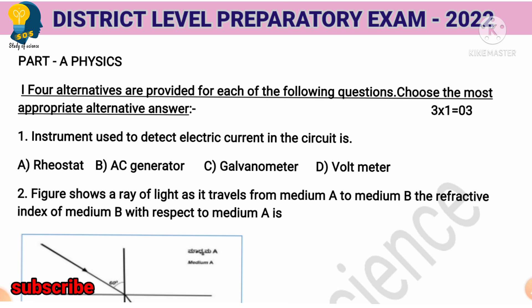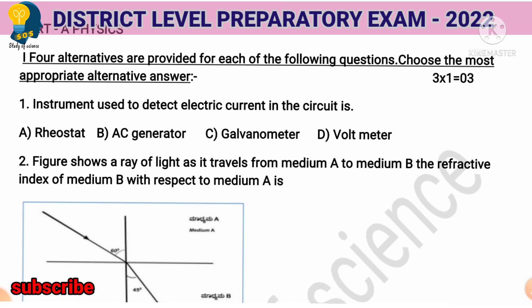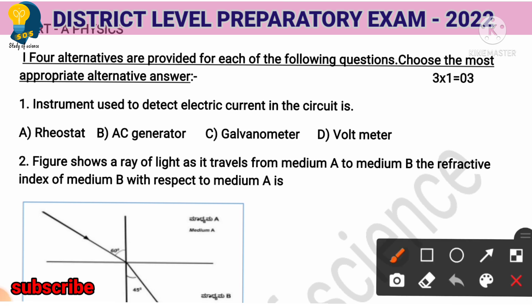Without further delay, this video will continue. So, physics part first. Here are the MCQs. The first MCQ is: the instrument used to detect the electric current in the circuit. The right answer is option C — Galvanometer is an instrument which is used to detect the electric current in the circuit.